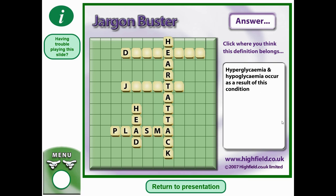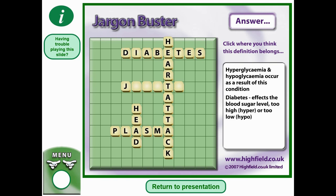Hyperglycemia and hypoglycemia occur as a result of which condition? Remember: hyper means too much sugar, hypo means too little sugar. So what could this bring on? The answer is diabetes — it affects the blood sugar level.